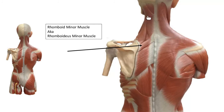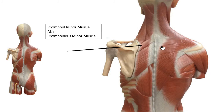Does anyone remember what this muscle is? — Splenius capitis. And this muscle attaching onto the corner of the scapula that helps elevate it? — Levator scapula. That's right, levator scapula. Good job. And this muscle here? — Erector spinae. And this one? — Latissimus dorsi.